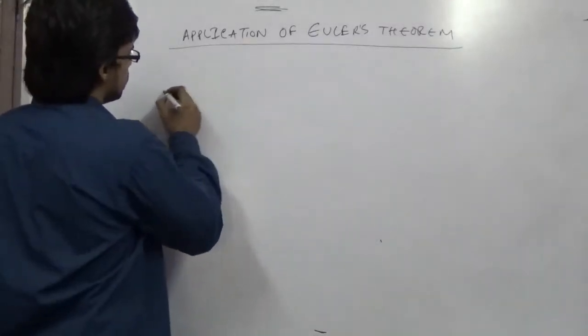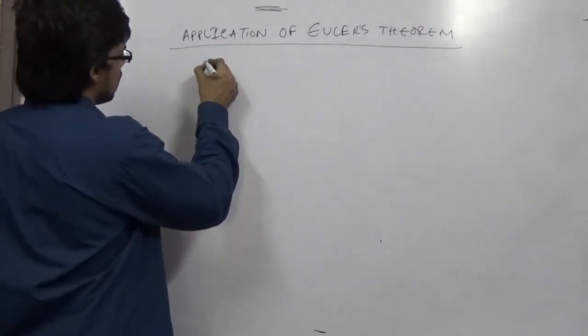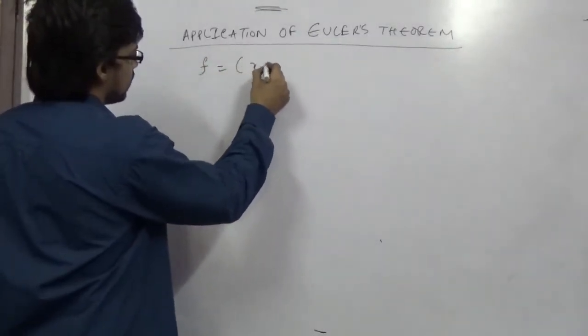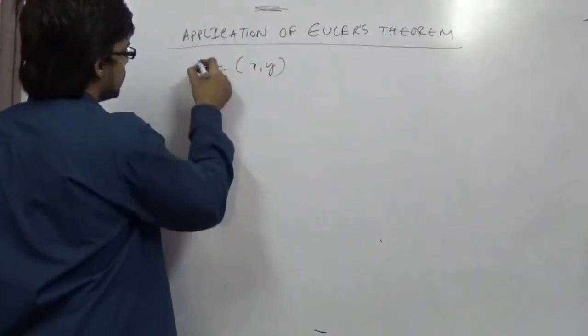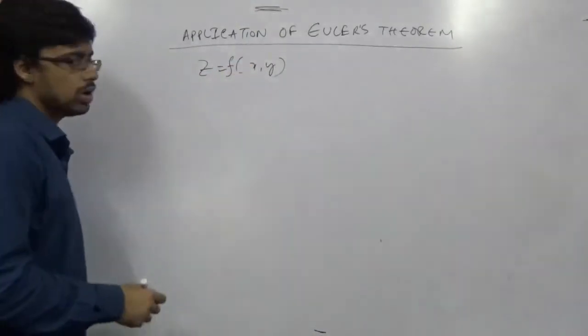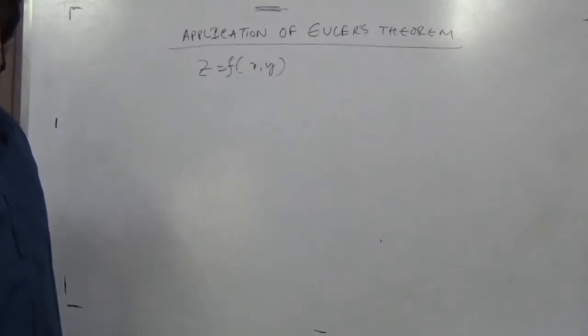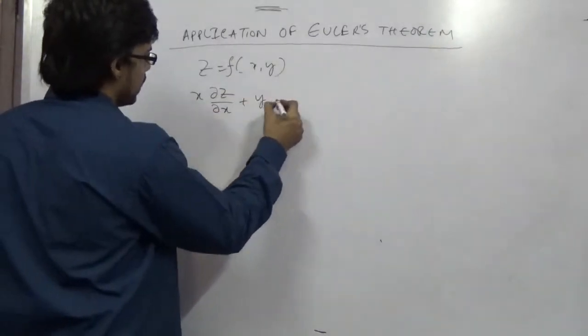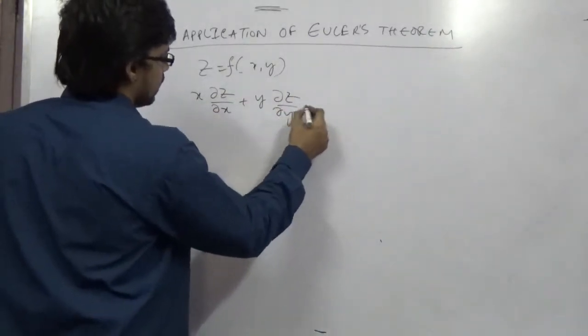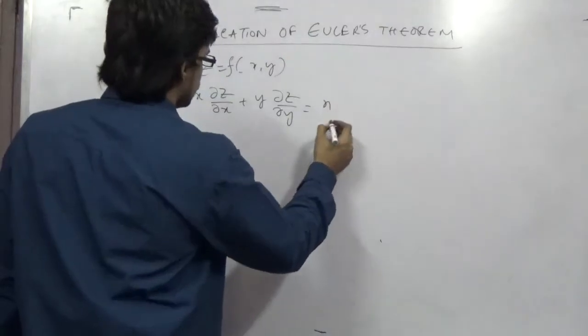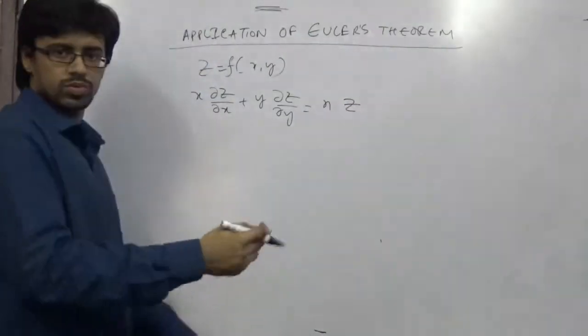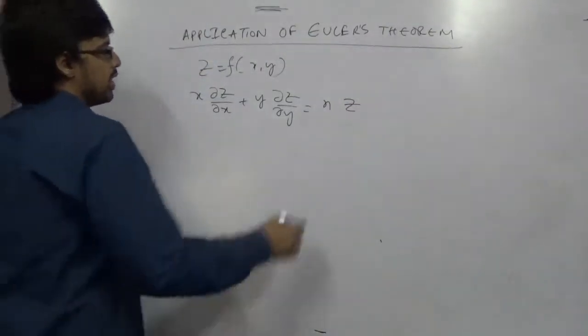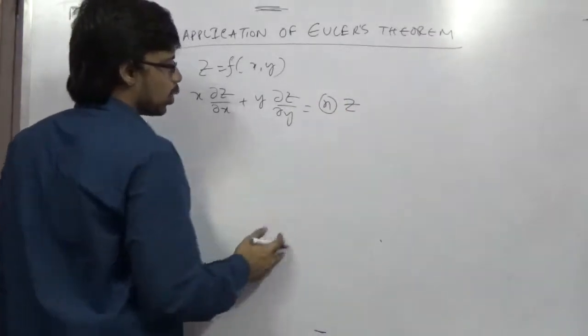For example, z is a function of x and y. So according to this theorem we can write that x times del z del x plus y times del z del y is equal to n times z. That is as simple as this. What is n? n equals the degree of homogeneity.